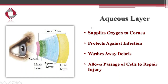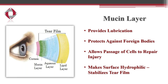The middle aqueous layer is the watery layer secreted by the lacrimal gland. The purpose of this layer is to supply the cornea with oxygen, protect against infection, and wash away debris. It also allows the passage of certain cells through the tear film to reach the cornea and help repair tissue in case of an injury such as a corneal abrasion.